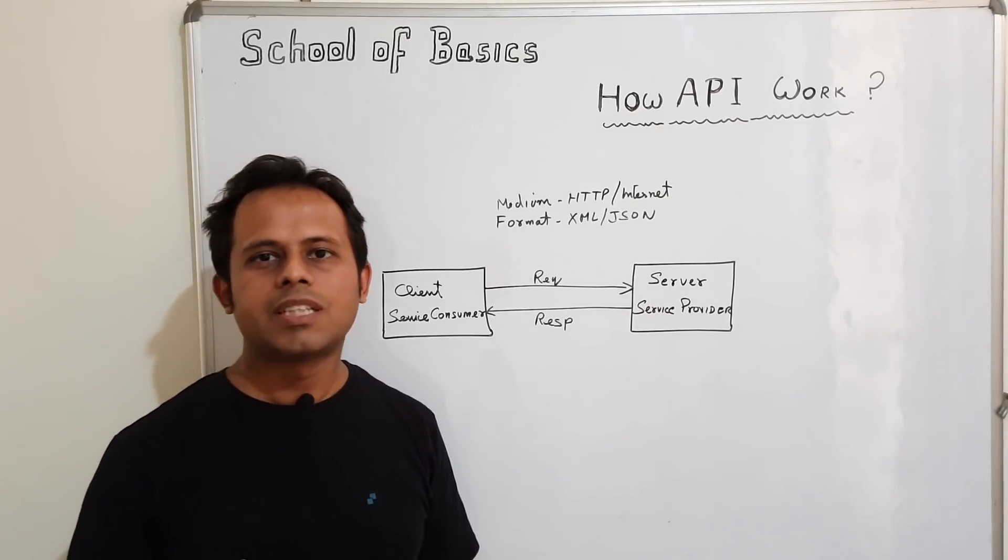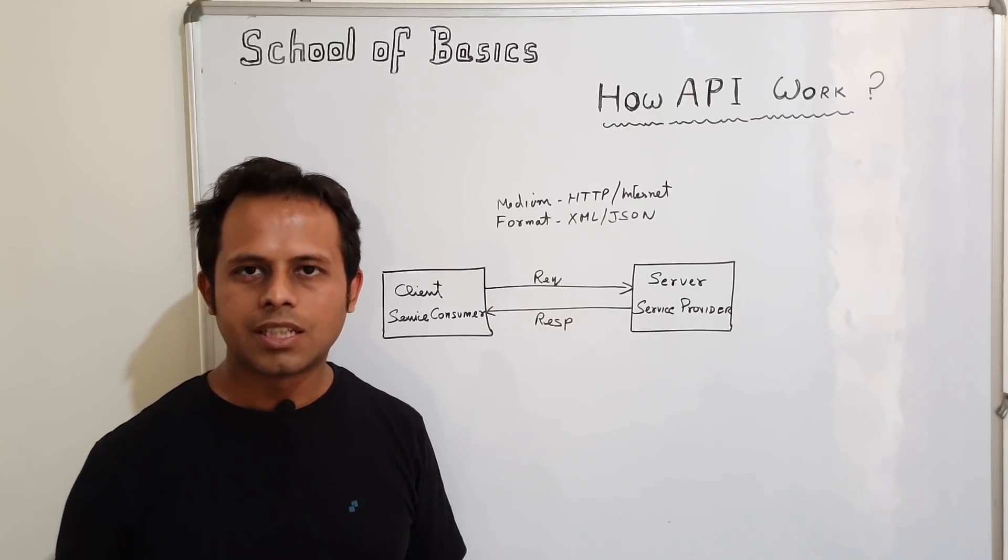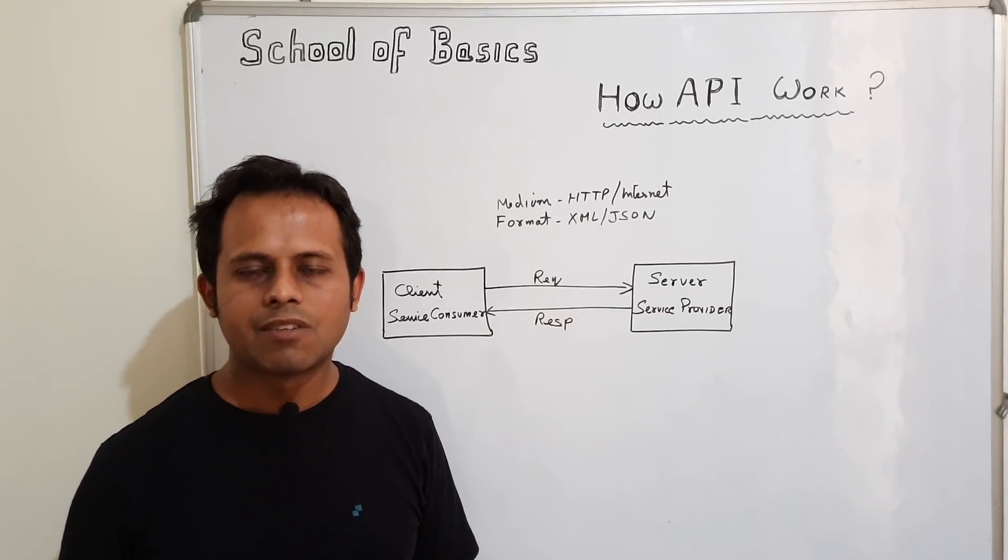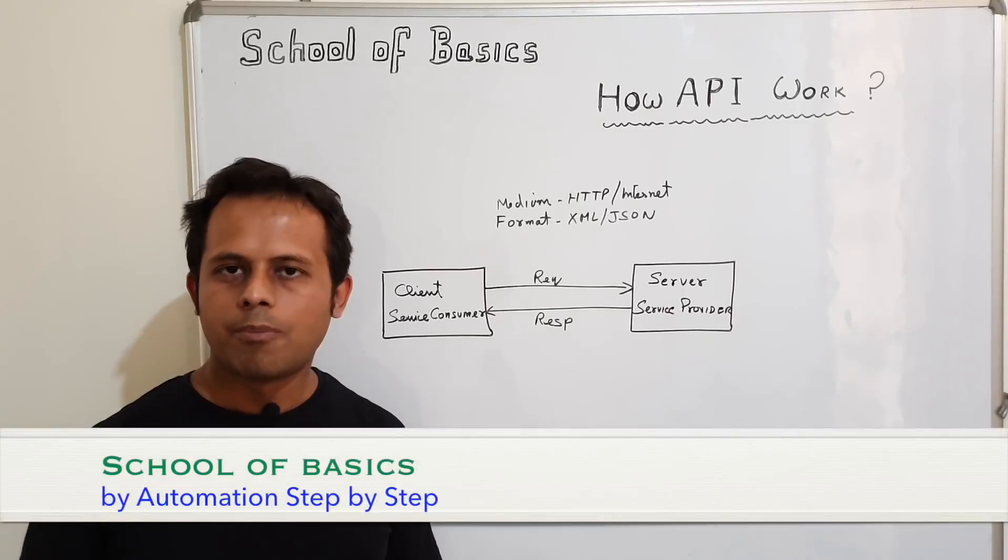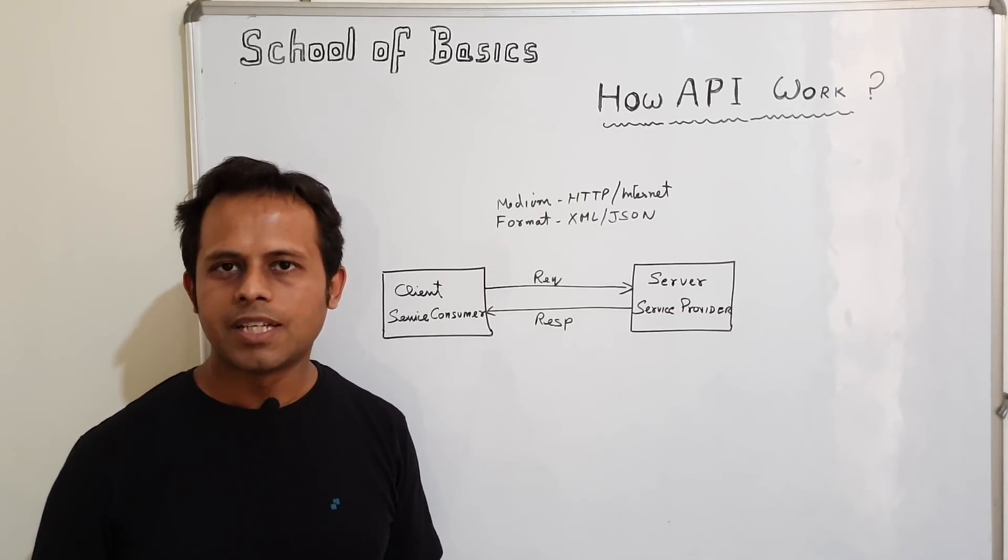So this is at a very basic level how APIs work or how APIs communicate with each other. Different types of APIs have different types of formats and mediums. But this is at a very basic level how APIs work.